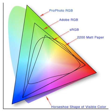CIE 1931 XYZ color space was one of the first attempts to produce a color space based on measurements of human color perception; earlier efforts were by James Clark Maxwell, Koenig and Diatarici, and Abney at Imperial College, and it is the basis for almost all other color spaces.